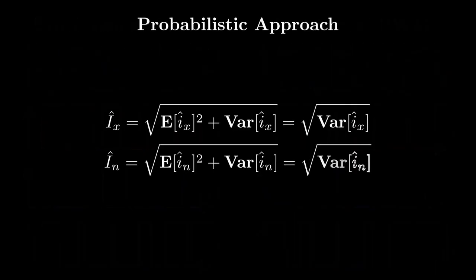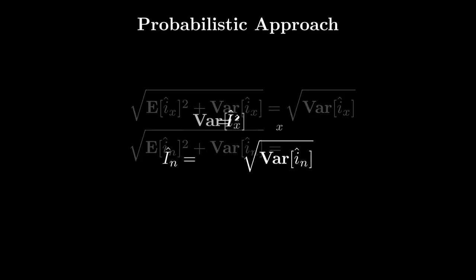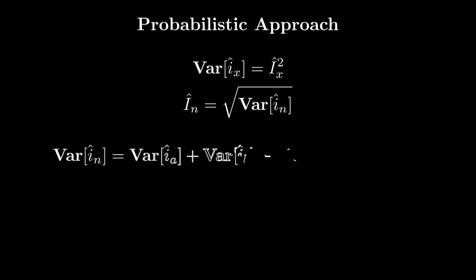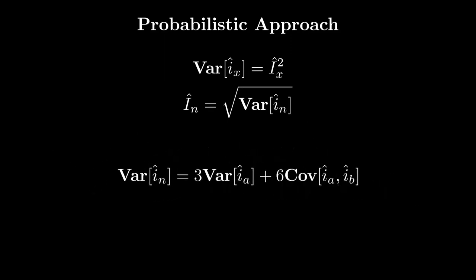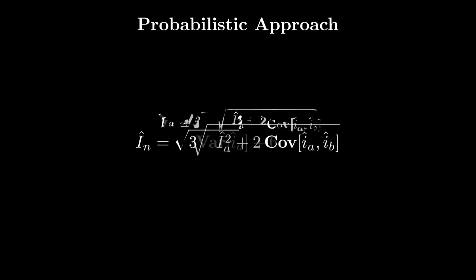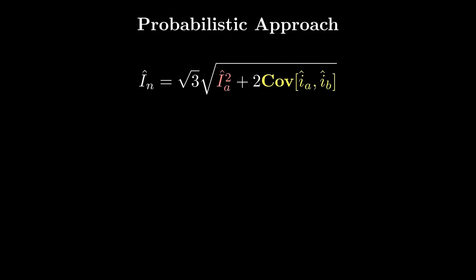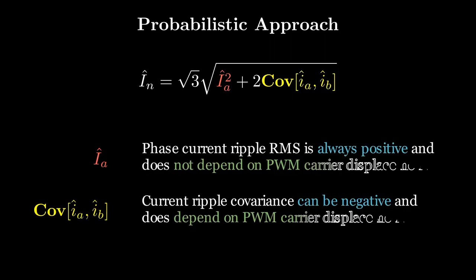How to quantify this cancellation effect? How to understand what constructive and destructive summation mean? On this aspect, it is particularly useful to look at the neutral current ripple RMS using a probabilistic approach. Indeed, by describing the RMS in terms of ripple variance and playing with the algebra of random variables, it is possible to understand that neutral current ripple is constituted by a positive component equal to the phase current ripple RMS plus a component that represents the covariance of any couple of current ripples.